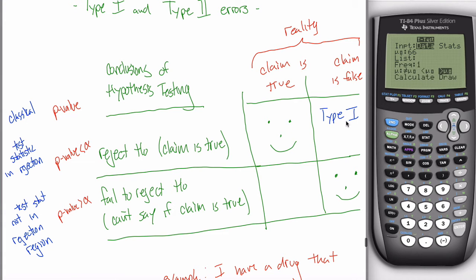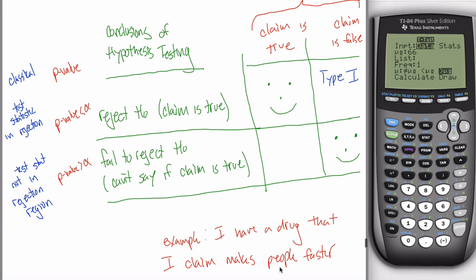We'll never know if we make a type 1 error — we just talk about it hypothetically. What it would mean is: the claim is false, but we say the claim is true. We'll never know if the claim is false because to know that we'd have to give the drug to everybody in the population, and the population is too big. We'll never get information about the population parameters; we just estimate them from sample statistics. If we incorrectly reject the null, we're making a type 1 error.